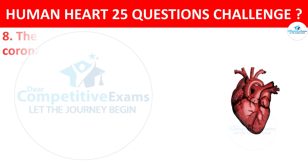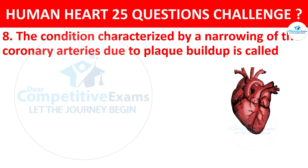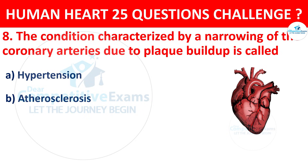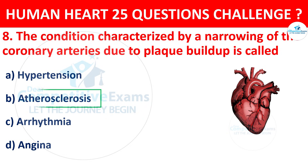Question number 8. The condition characterized by a narrowing of the coronary arteries due to build-up is called? Options: Hypertension, Atherosclerosis, Arrhythmia, or Angina. The correct answer is B, that is Atherosclerosis.